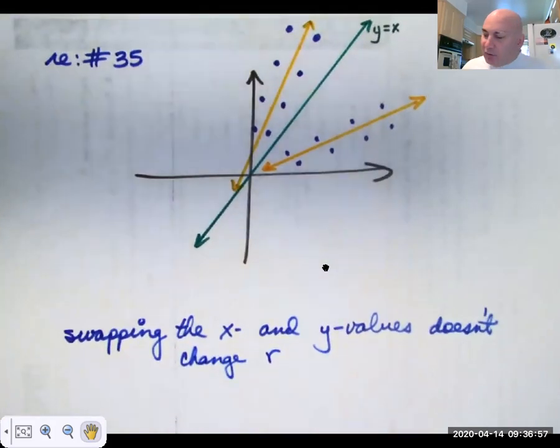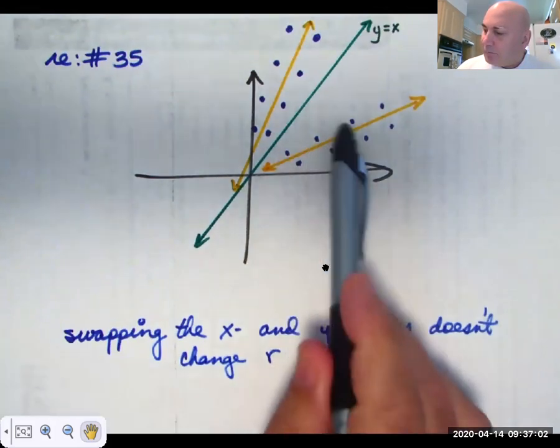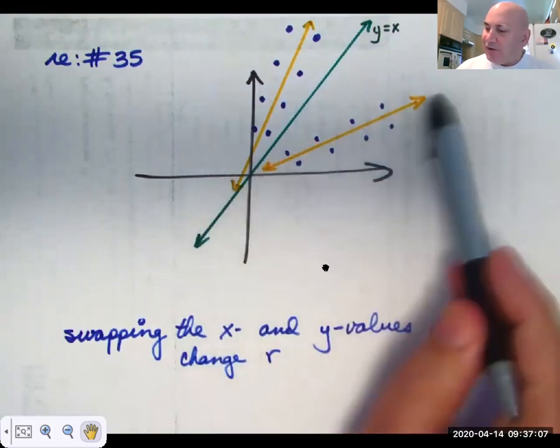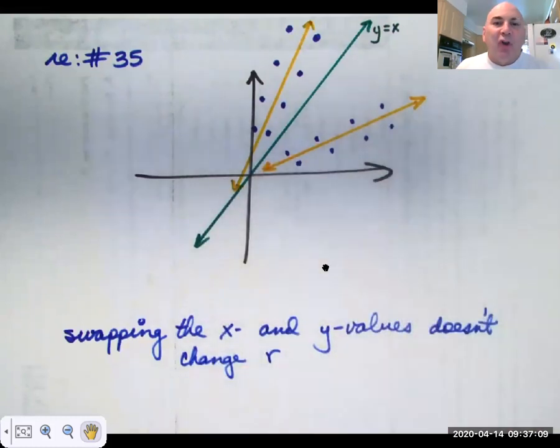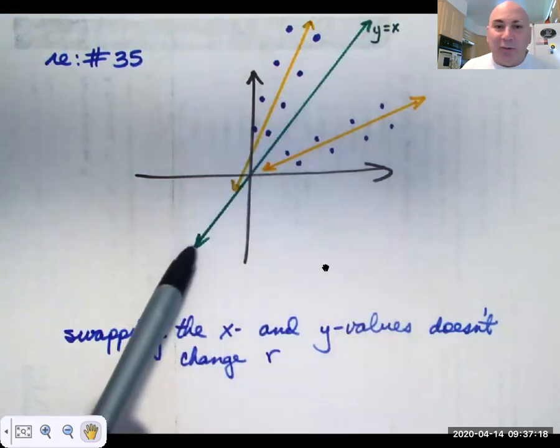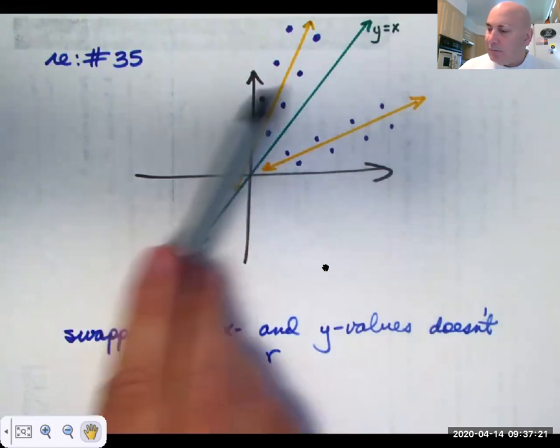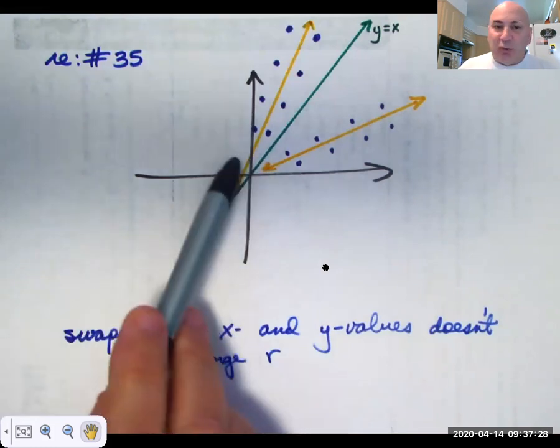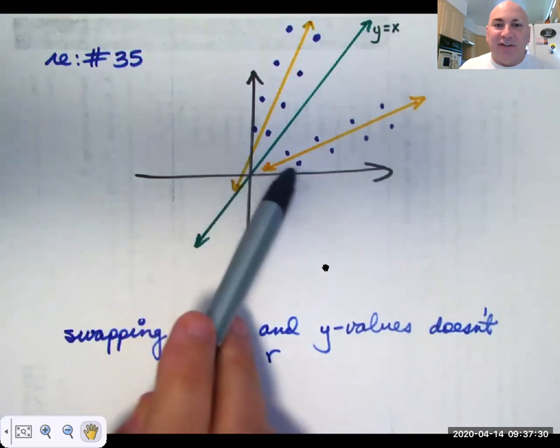So let's say that our data set, these eight points. Here's our regression line. Well when you swap x and y you're reflecting your data points over the line y equals x. Here's y equals x. Here are my reflected data points. You'll notice that they're just as close to this new regression line as these are to this one.